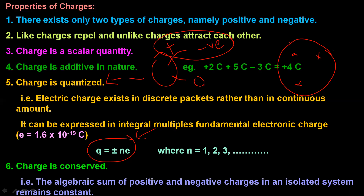The total charge of an isolated system should be a constant. We have learned the properties of charge: its definition, formula, and what charge represents. Now, what is electricity?